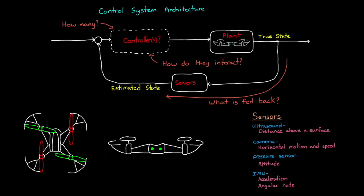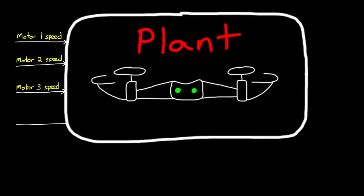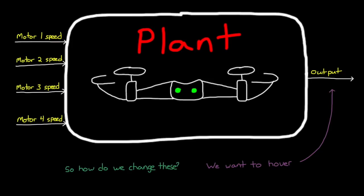In the control system we're developing, the plant is the mini-drone itself. It takes four motor speeds as inputs, which then spin the propellers, generating forces and torques that affect the output state. The output that we want is to have the mini-drone hover at a fixed altitude. So the question becomes, how do we command these four motors autonomously so that that happens?